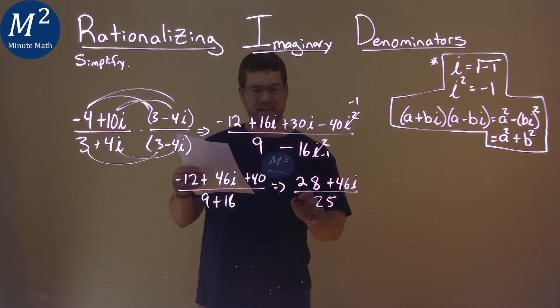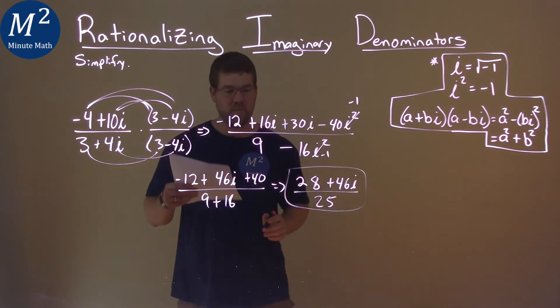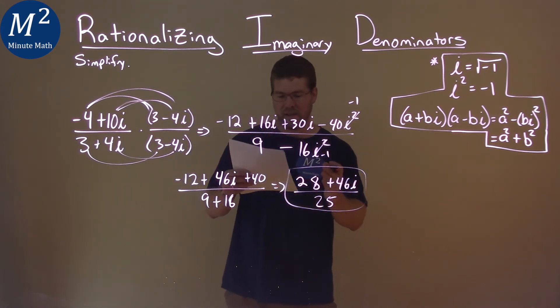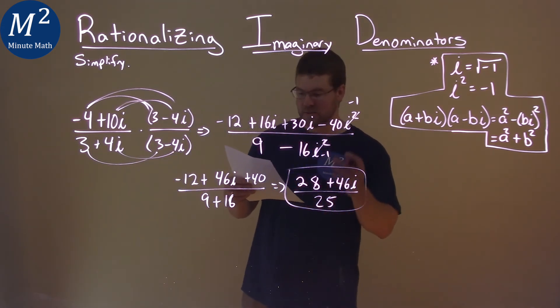And that's actually it. We can't really simplify anymore, and so our final answer is 28 plus 46i divided by 25.